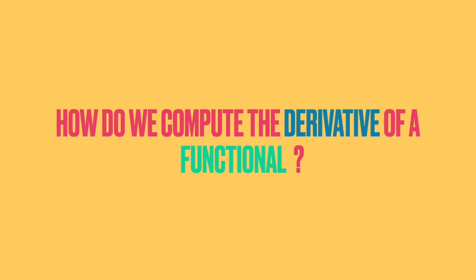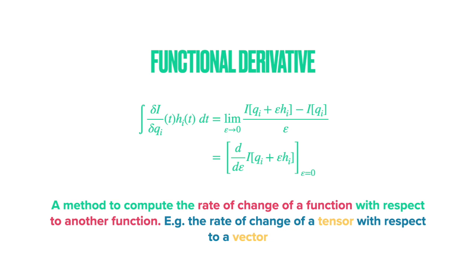But how do we compute the derivative of a functional? The action is a function that is a function of another function. A method to compute the rate of change of a function with respect to another function is called functional derivation.